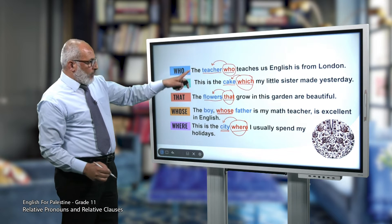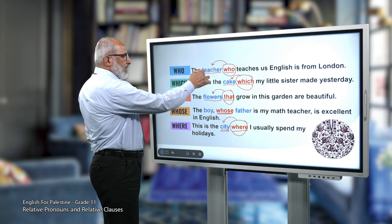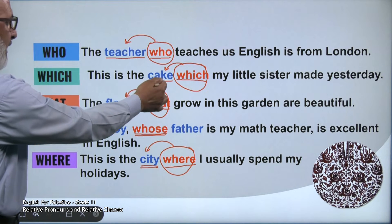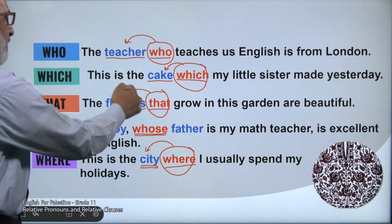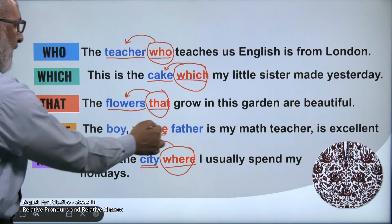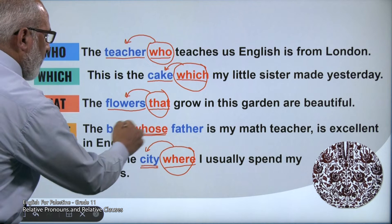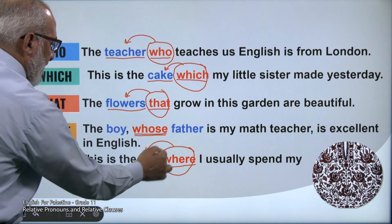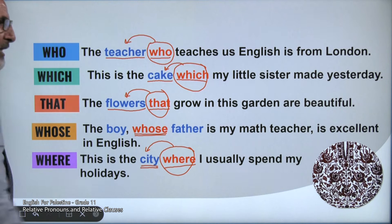So if you notice here: 'who' refers to a person, 'which' refers to a thing, 'that' refers to a thing, 'whose' is used for possession — the boy's father — and 'where' refers to a place, the city.